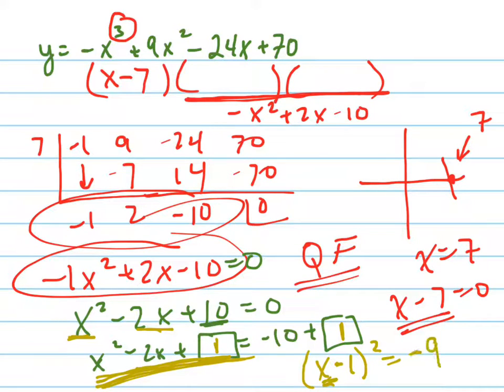Which now we can just solve this equation by isolating the variable. The square root of negative 9 is 3i, plus or minus 3i, I'm sorry, and then add 1 to both sides.